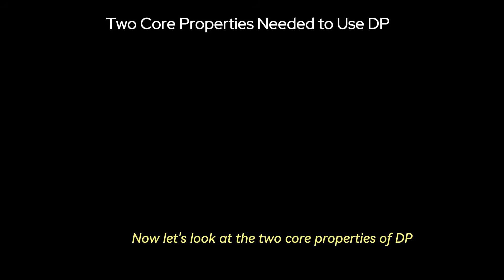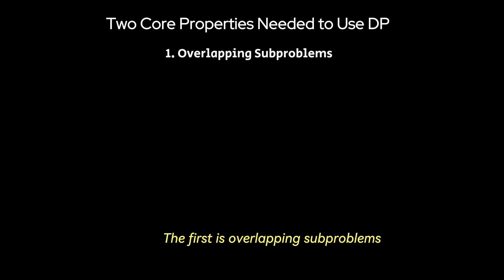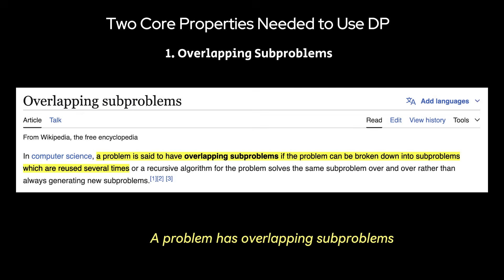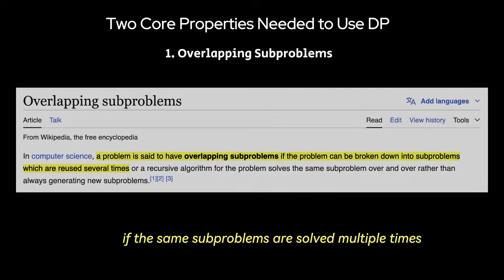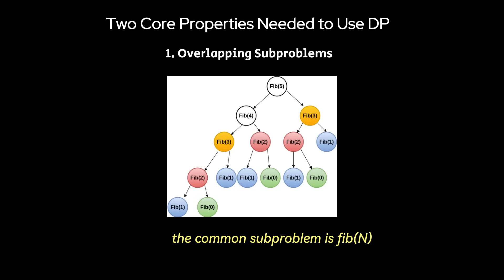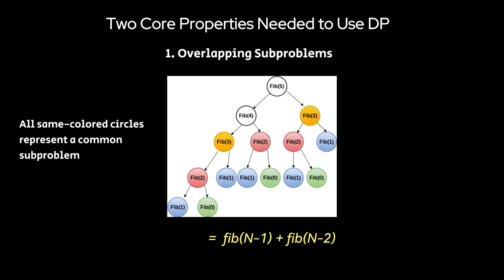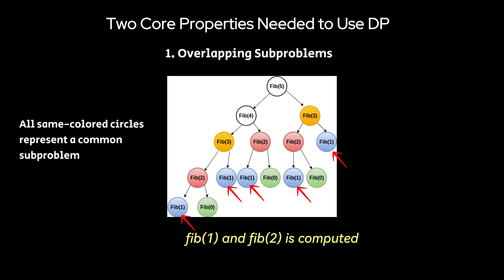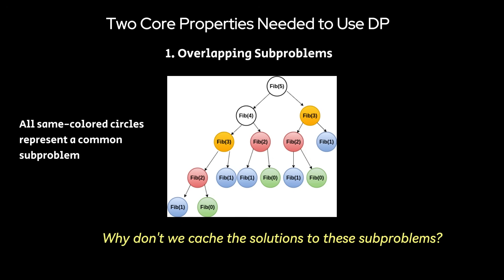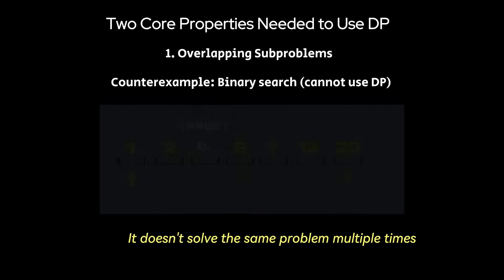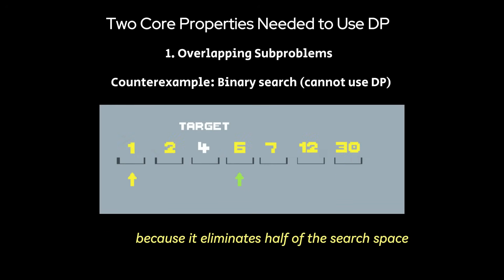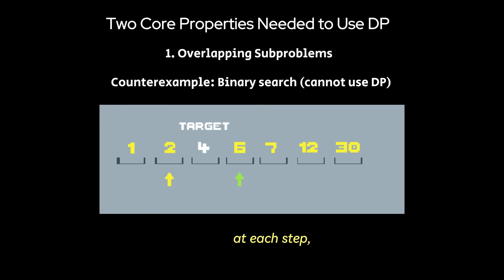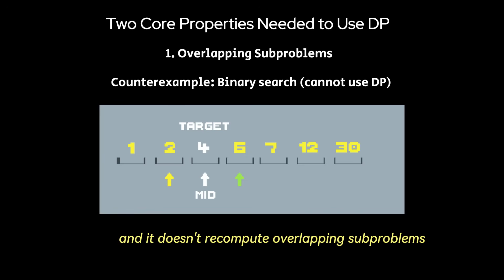Now let's look at the two core properties of DP. The first is overlapping subproblems. A problem has overlapping subproblems if the same subproblems are solved multiple times. In the Fibonacci sequence, the common subproblem is Fib(n) = Fib(n-1) + Fib(n-2). Look at how many times Fib(0), Fib(1), and Fib(2) are computed. Why don't we cache the solutions to these subproblems? A counterexample would be something like binary search — it doesn't solve the same problem multiple times because it eliminates half of the search space at each step and doesn't recompute overlapping subproblems.